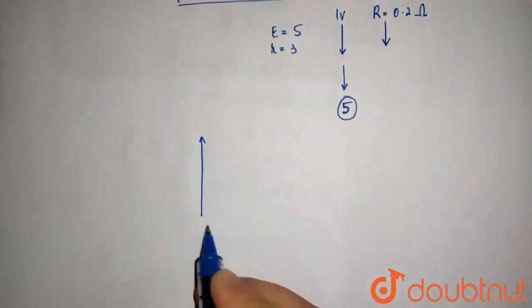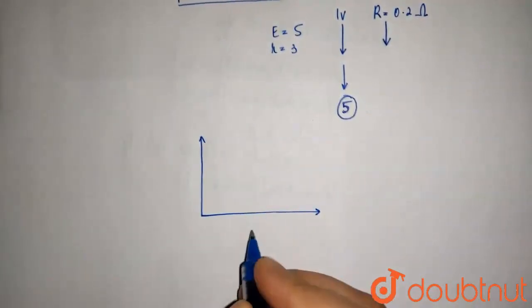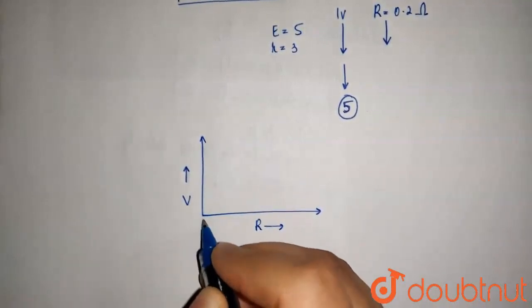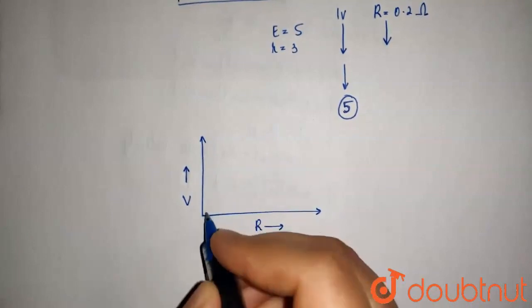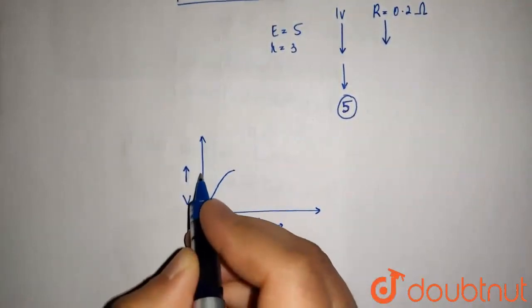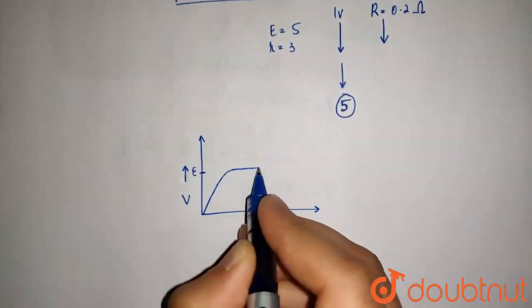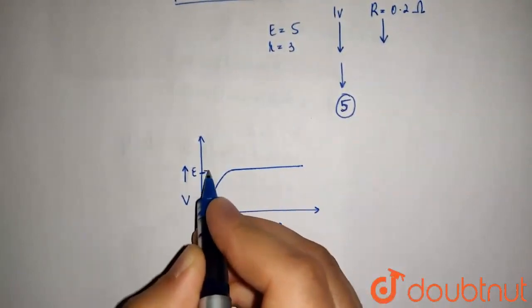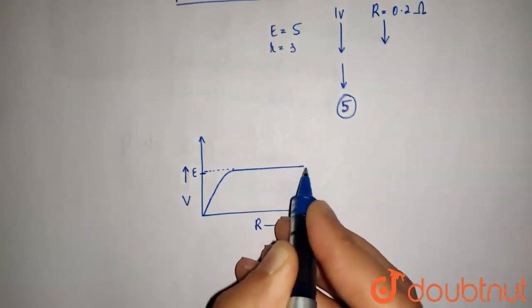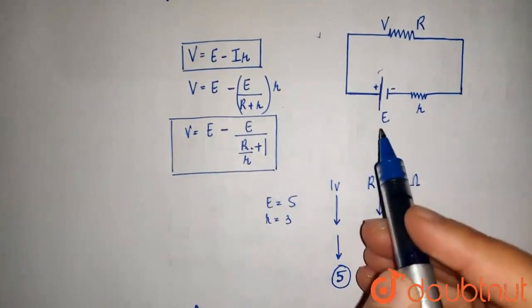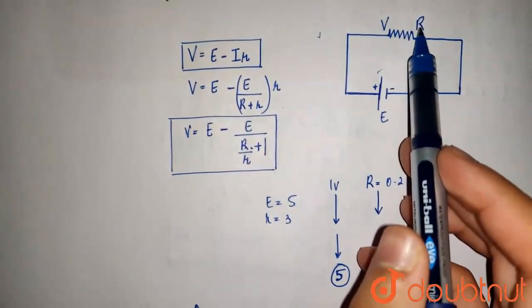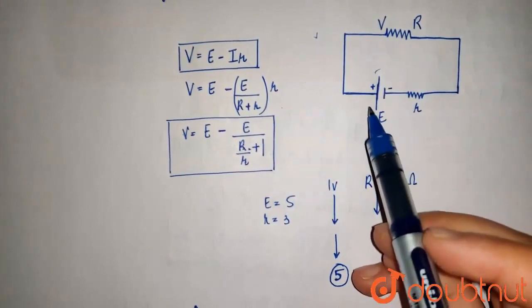This is our V axis, and this is our R axis. So, if we start from 0, it would increase to a point when it becomes equal to the EMF of the cell. So, the graph will be something like this. It keeps on increasing, but then becomes constant. It's obvious because the total EMF is the maximum value that could be across this resistor. It cannot be more than that.